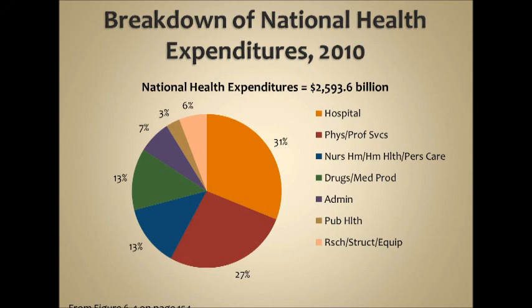Looking at the breakdown of 2010 healthcare expenditures, what I hate about this slide is the tiny brown part that says 'public health.' The reason so much spending ends up in administration is because the public health portion isn't very big. In any other developed country, public health would dominate this slide — because public health is all about preventing disease, making the population generally healthier, and giving people quality of life.